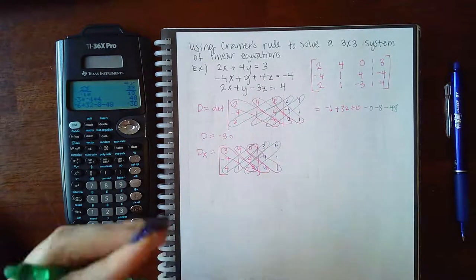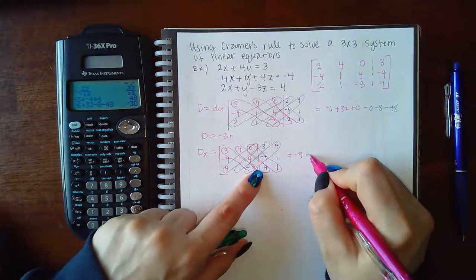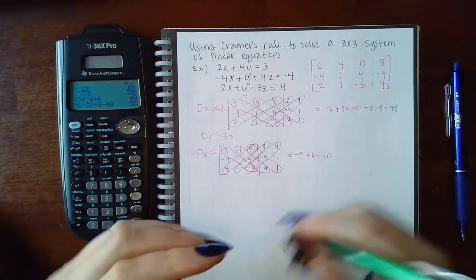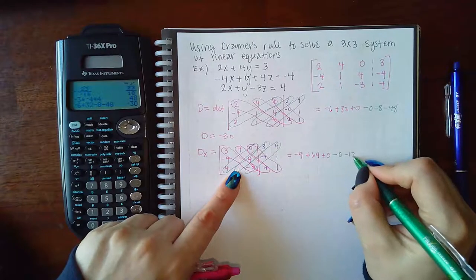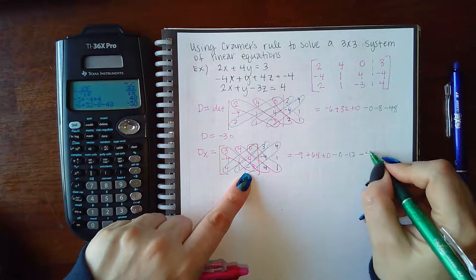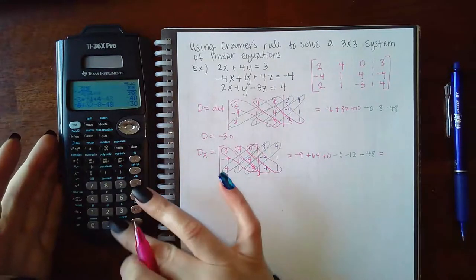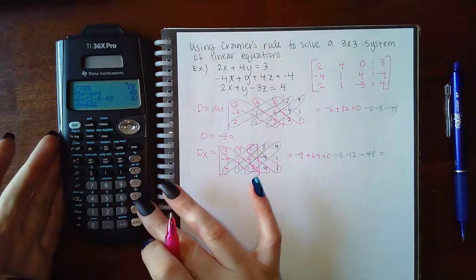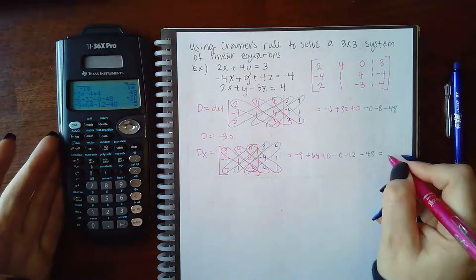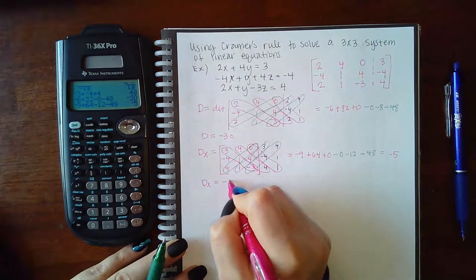So let's see what we end up with. We end up with negative nine plus 64 plus zero minus zero minus 12 minus 48. And so what is that? That is negative five. So we get that DX is actually negative five.